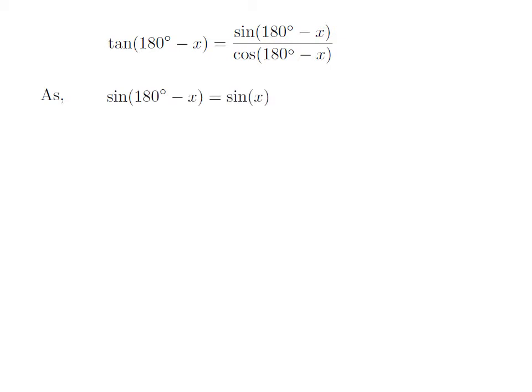We know the trigonometric identity: sine of 180 degrees minus x is equal to sine of x. The proof of this identity has been explained in the video appearing in the upper right corner, and the URL has also been mentioned in the description section.